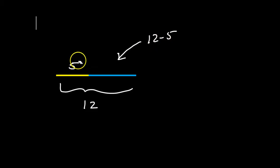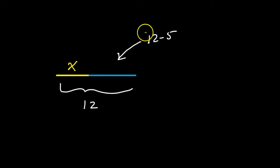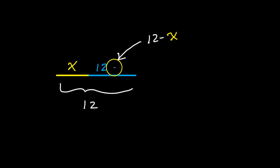Hold that in your mind. What if instead of a 5, this was an x? You wouldn't be able to give an exact number for the other side, but you could give an expression. Just like we calculated the other side by doing 12 minus 5, now we could say this other part will be 12 minus x. That's what you could put as your expression — we have x here, and over here this will be 12 minus x.